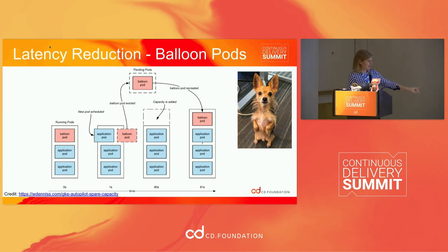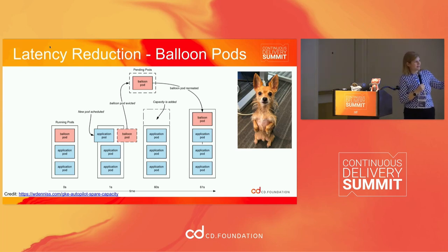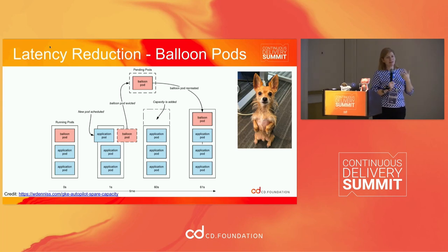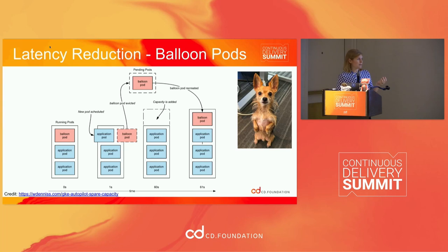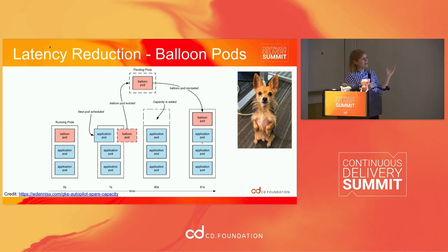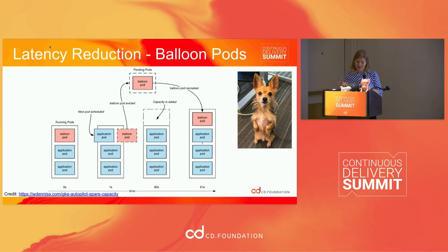Peanut finds a solution — there's a blog post linked on the slide if you're interested in reading more. We have this concept of balloon pods. The pink pods are balloon pods and the blue pods are our Tekton task runs. A balloon pod is a pod that we schedule when we bring up the node pool at negative 10 priority. As soon as we need more resources, the balloon pod gets bumped, becomes a pending pod, and the application pod — the task runs — are able to be scheduled within a second rather than 50 seconds. While the application pods are running, the balloon pod will be rescheduled and capacity will be added while no one's waiting for it. This decreased the latency startup time during scale-up and makes the timing of pipeline run executions more predictable.